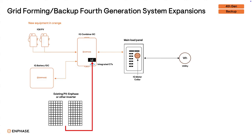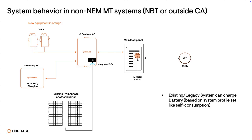With a future software update, the existing PV will be able to continue operating when the system is off-grid if sizing and design restrictions are met. The system will behave differently if it's a California NEM multi-tariff system versus a non-NEM multi-tariff system. Here's an example of system behavior for a non-NEM multi-tariff system such as net billing tariff or outside California. NEM multi-tariff rules don't apply, so the existing PV system can charge the battery of the expansion system and the PV system can export power to the grid. In this example, the expansion PV system and the existing PV system are producing a combined total of 4.7 kilowatts.